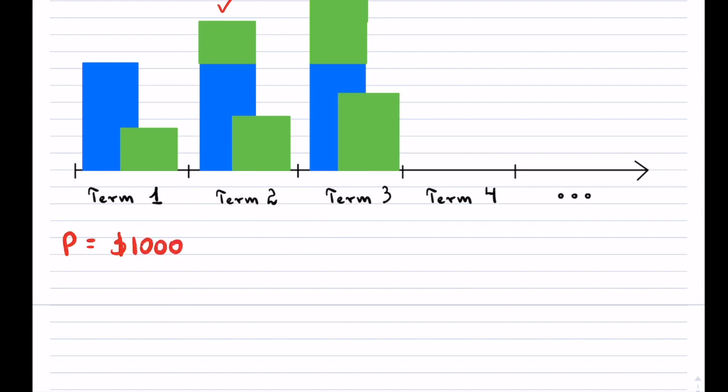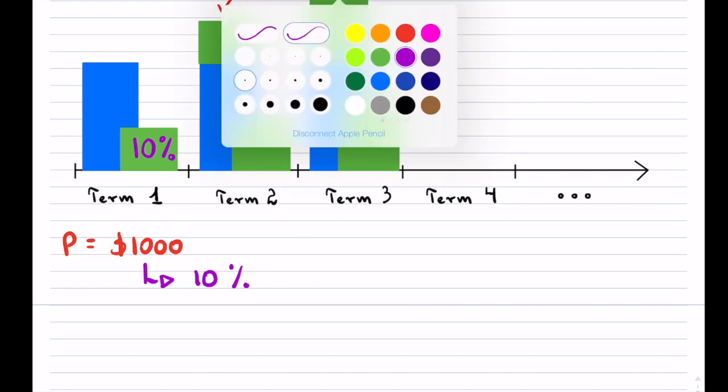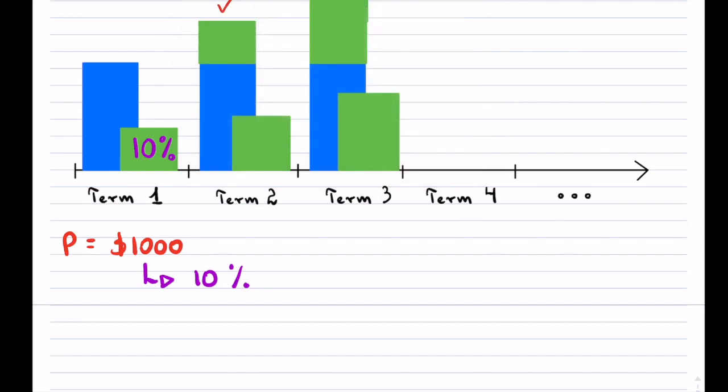And now, just for the sake of simplicity, I will say that our original interest is 10%. Now, of course, that 10% is off of the original amount of $1,000. So what is 10% of $1,000? Well, it's $100.